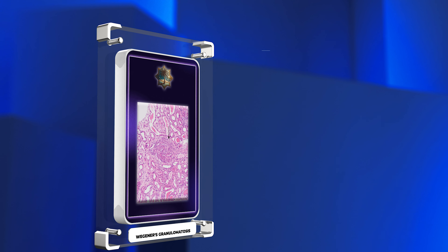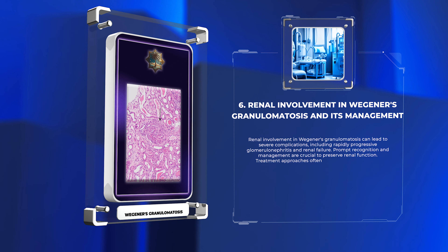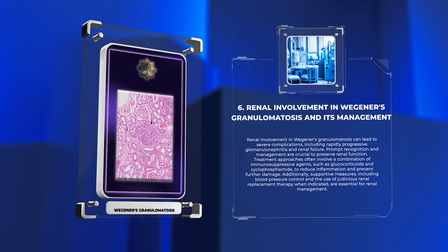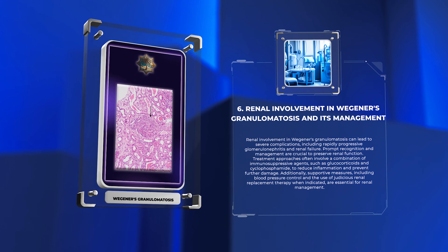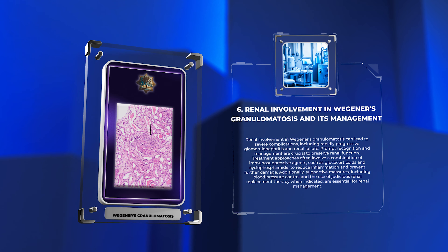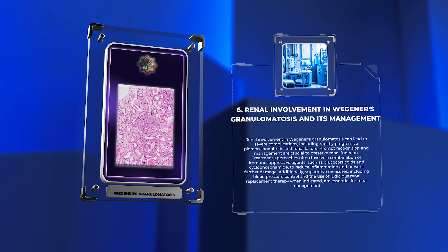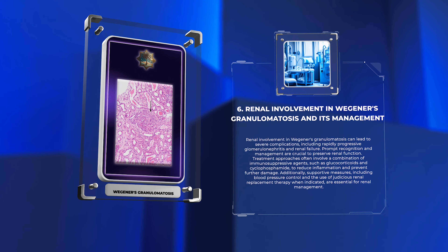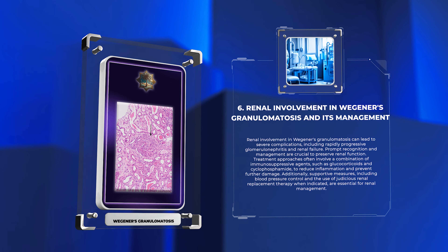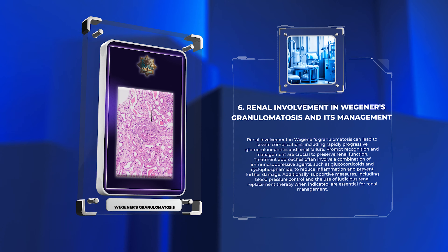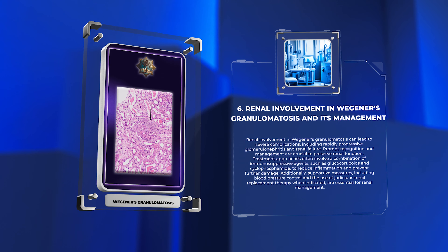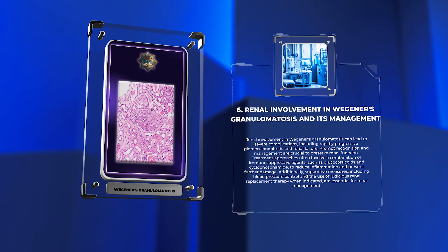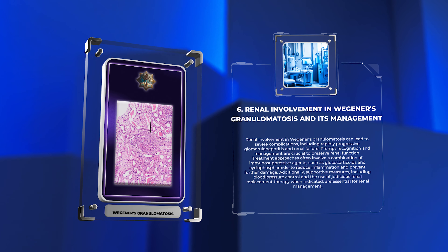Renal involvement in Wegner's granulomatosis can lead to severe complications, including rapidly progressive glomerulonephritis and renal failure. Prompt recognition and management are crucial to preserve renal function. Treatment approaches often involve a combination of immunosuppressive agents, such as glucocorticoids and cyclophosphamide, to reduce inflammation and prevent further damage. Supportive measures, including blood pressure control and judicious renal replacement therapy when indicated, are essential for renal management.